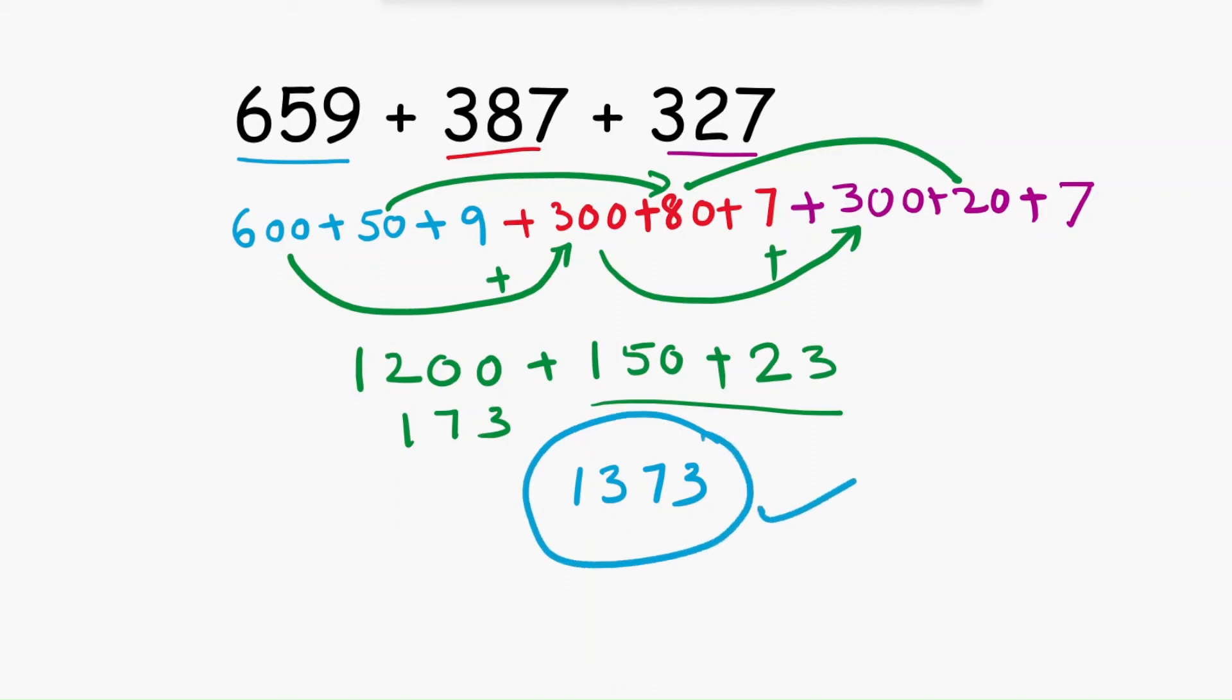1373 is the answer. If you are able to do without doing these calculations, you can mentally calculate the hundreds and tens place and ones. 1373 is the answer.